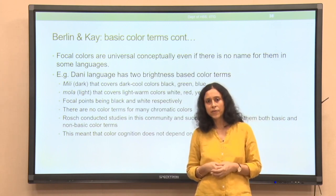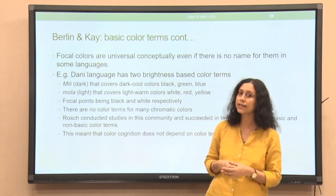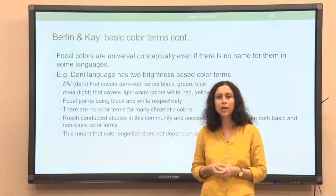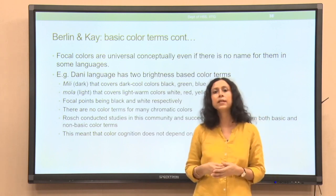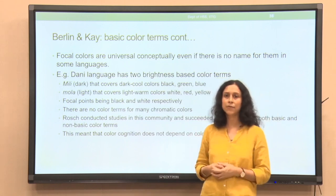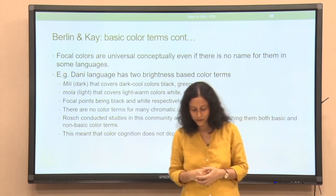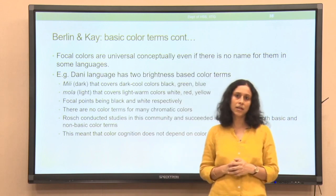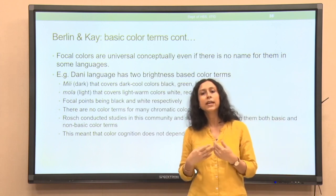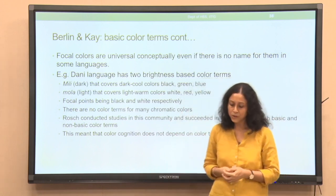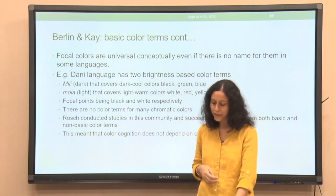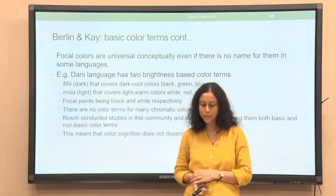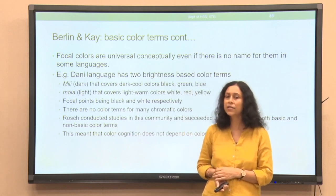Another important aspect is the possible relationship between color terms and color cognition. If a language has very few basic color terms, does it limit our ability to understand and talk about colors? Research by Rosch and her group found that it does not. Limitation in the number of color terms does not mean limitation in your capability to identify or learn color names. Rosch succeeded in teaching the Dani community both basic and non-basic color terms. This means color cognition does not depend on color terms.